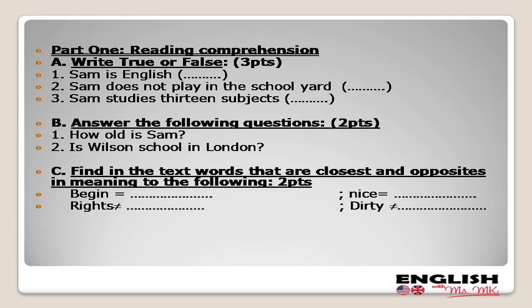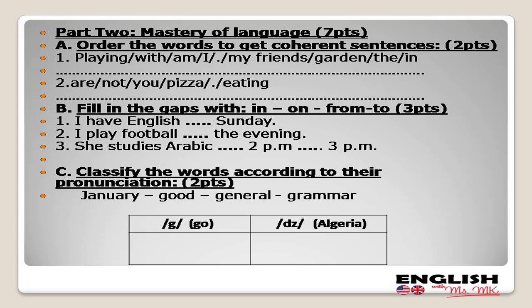We move directly to part two: mastery of language. Since sequence four talks about the present continuous and prepositions of time, I have chosen to provide them with a reordering activity as the first activity in mastery of language. The second activity is putting in prepositions of time, and the third activity is a pronunciation lesson. I think this lesson has not been omitted, so we just have to follow the adopted planning.